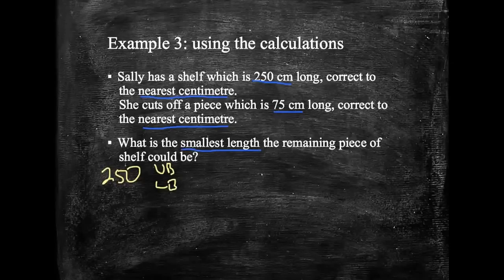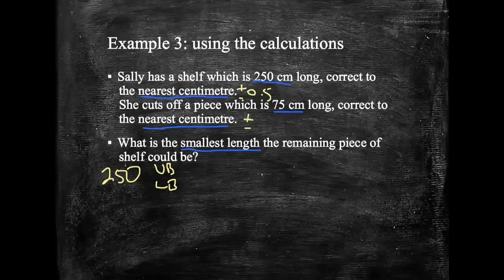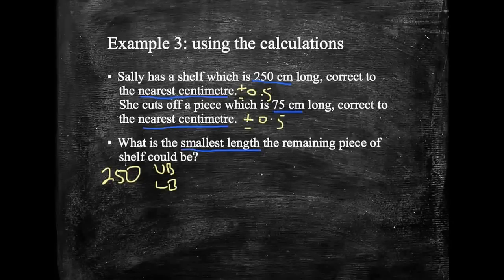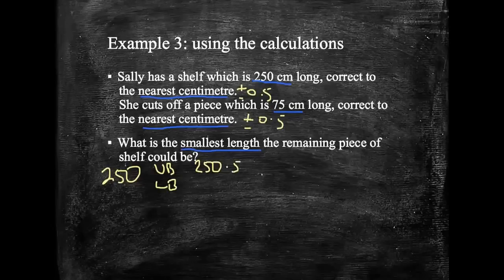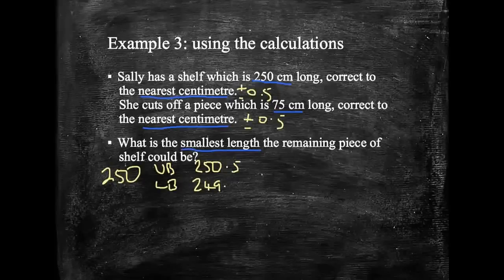Let's take 250 and calculate the upper bound and the lower bound. Upper bound, in this case, nearest centimeters, so we're adding 0.5. So add and take 0.5 here. And again, add and take 0.5 for this one. So here we've got 250.5, and the lower bound would be 249.5.